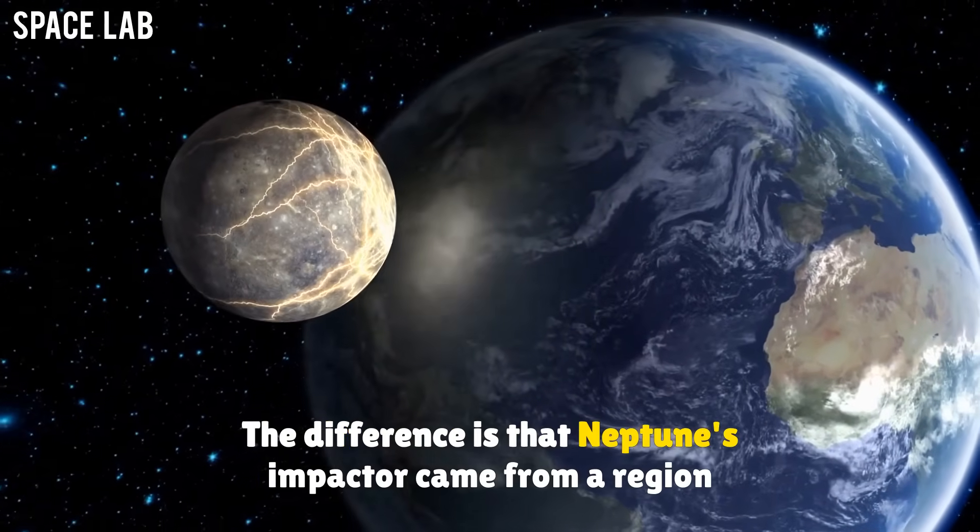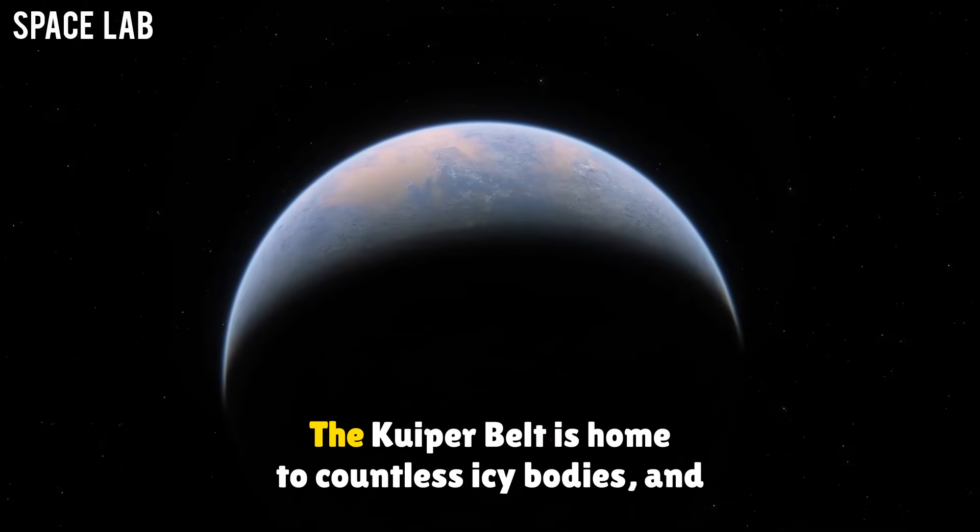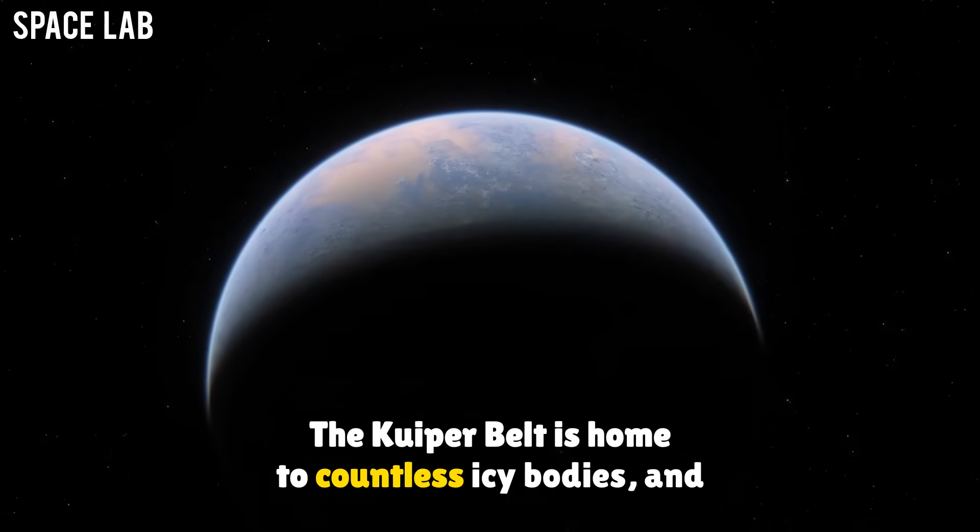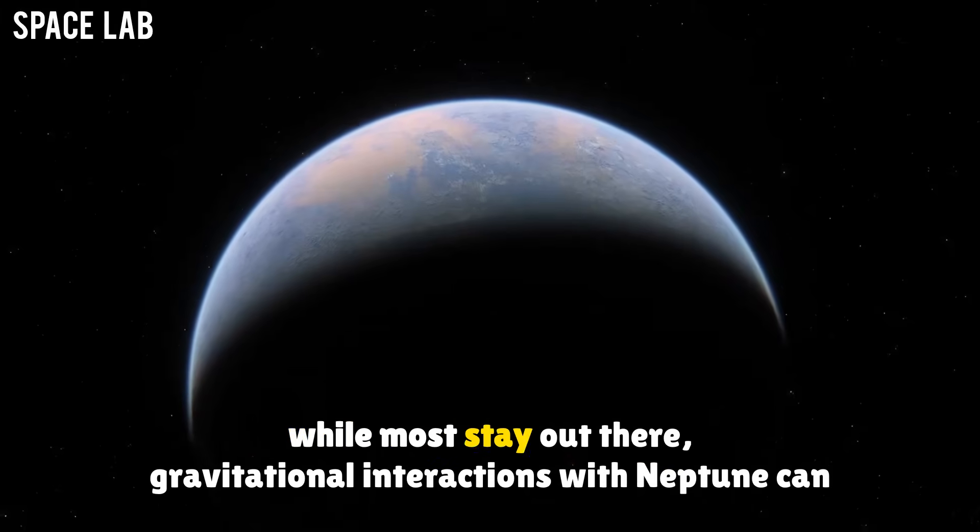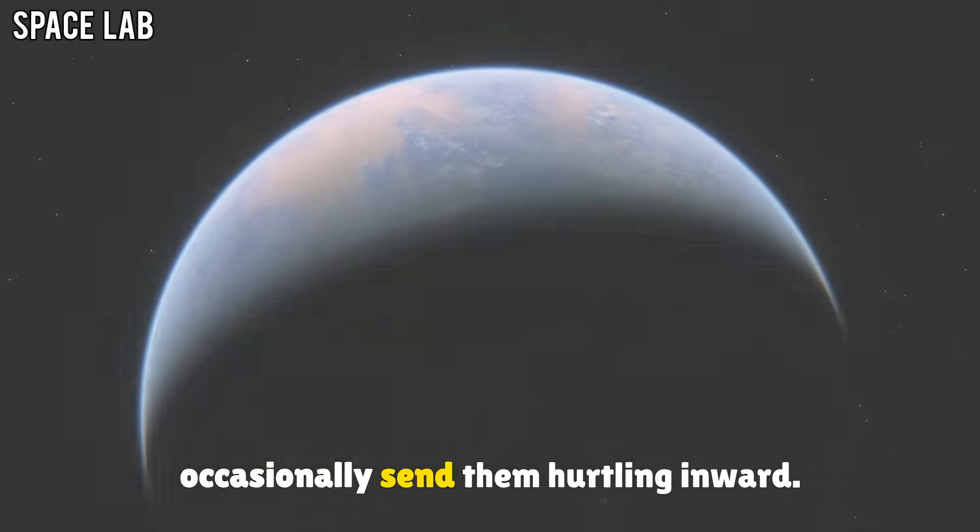The difference is that Neptune's impactor came from a region of space far beyond Earth. The Kuiper belt is home to countless icy bodies, and while most stay out there, gravitational interactions with Neptune can occasionally send them hurtling inward.